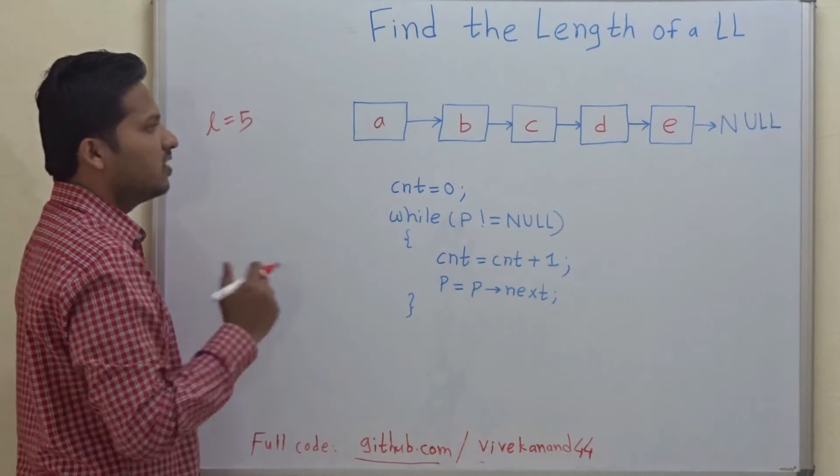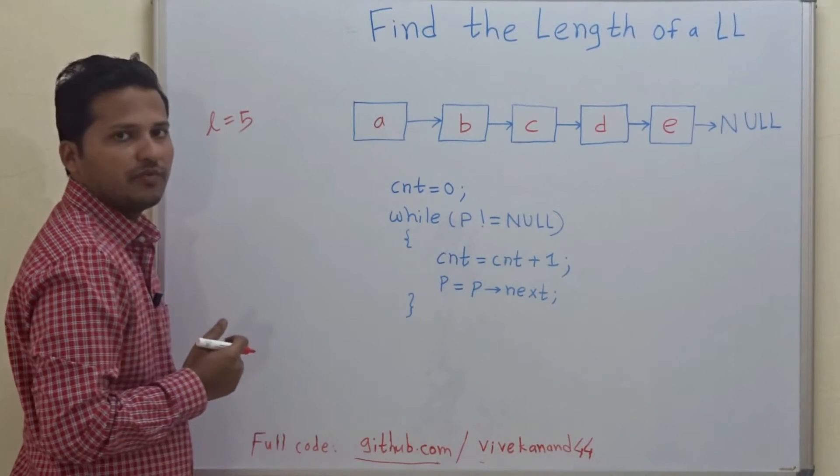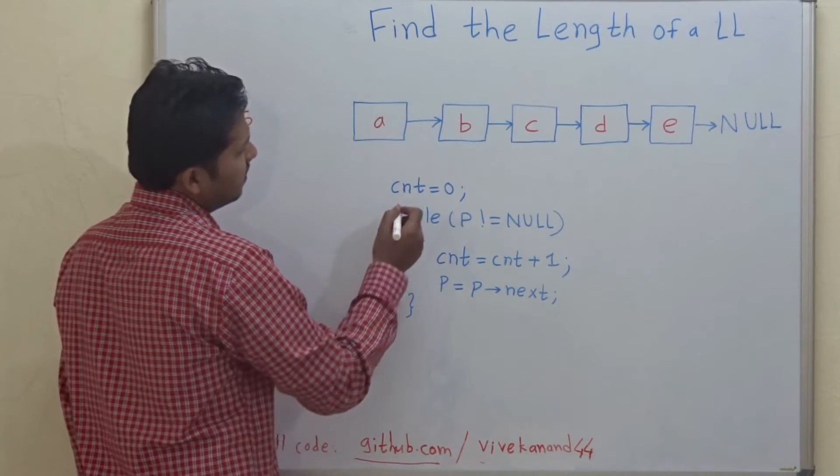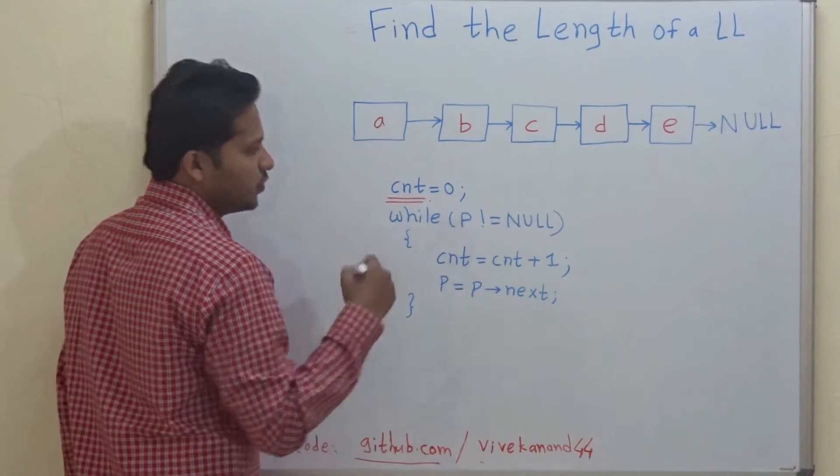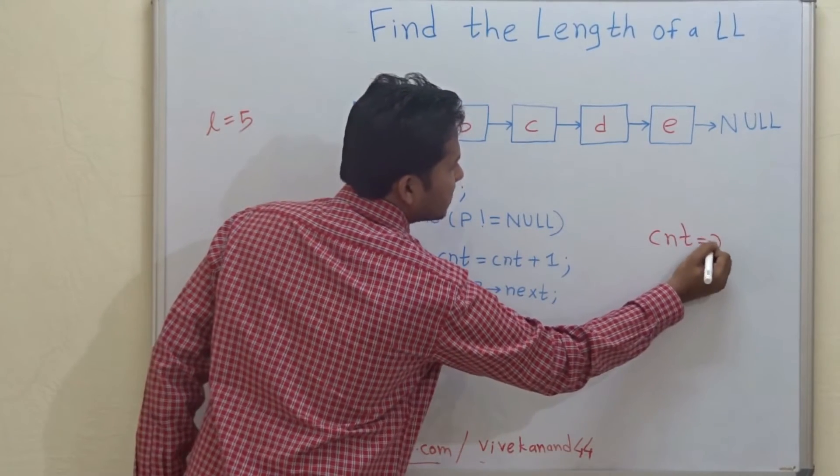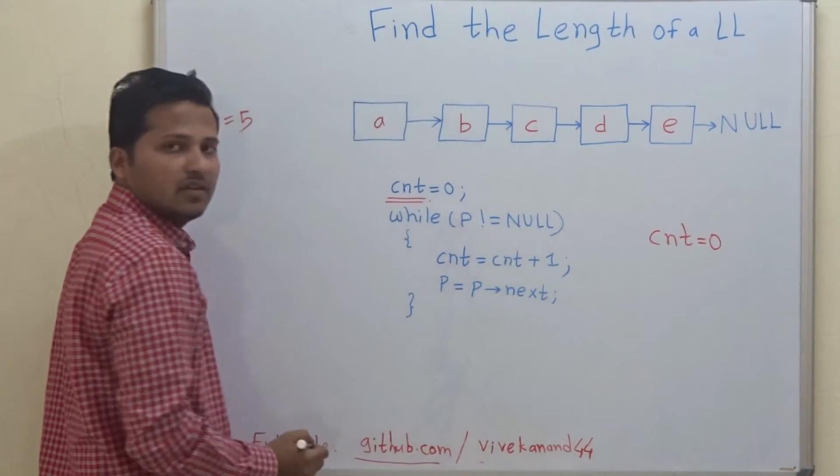Let's see how to write a program to calculate the length of this linked list. Here, this is the variable counter which will count the length of the linked list, and this variable has been assigned value zero at the beginning.